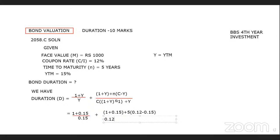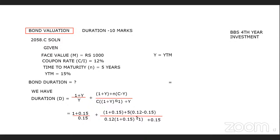So, 1 plus 0.15 — recording — power 5, or minus 1. The face value plus 0.15, solve it.